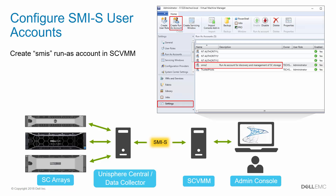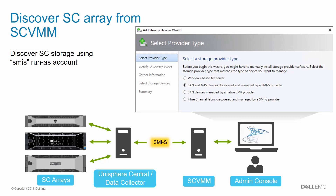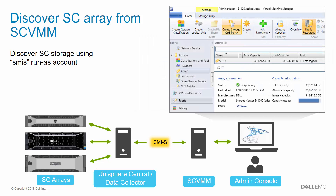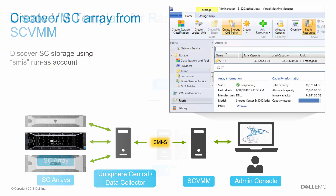A matching SMIS user also needs to be created in SCVMM. Use the SCVMM administrator console to create a new RunAs account under Settings. Once the SMIS users are created, you are now ready to discover and manage SC storage from SCVMM. To discover storage, launch the Add Storage Devices wizard in SCVMM and specify the SMIS RunAs account for authentication. Once the wizard completes, the SC array will be listed in the SCVMM fabric under Arrays with a status of Responding.